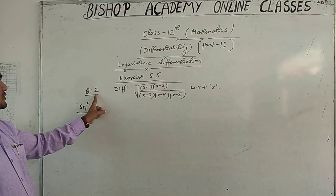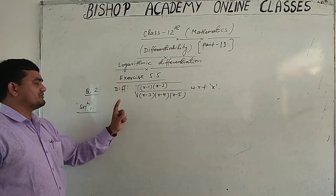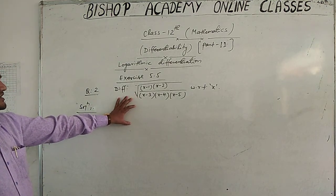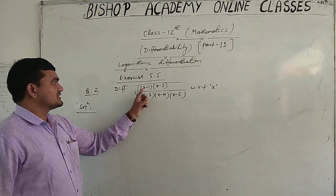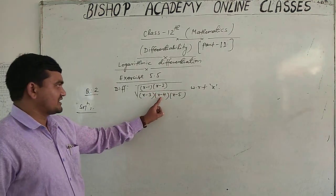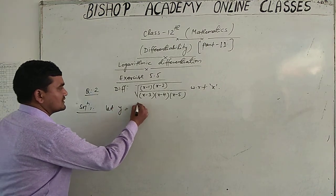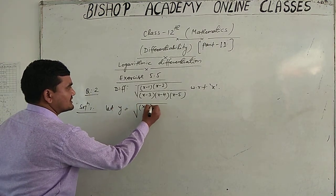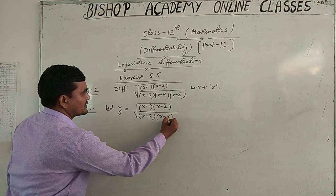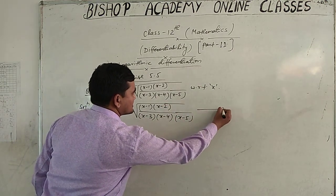Now, question number 2, which is based on an NCERT problem of Exercise 5.5. In this question, we have to find out the derivative of the given function: root of (x minus 1) into (x minus 2) upon (x minus 3) into (x minus 4) into (x minus 5). Let y equal to this expression — this is equation number one.